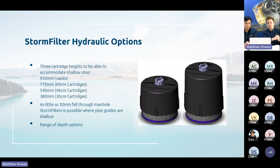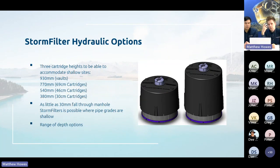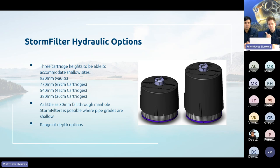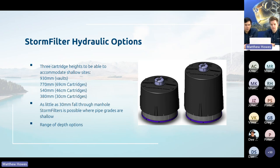There are many places within the Storm Filter where there are individual head losses through the system. We have a range of driving head options: 930mm for our vaults, 770mm, down to 380mm depending on cartridge height within manholes. These head losses account for all losses through the system — the depth of flow in the outlet pipe, losses through the restrictor disk, the under drain, and the cartridge. There is a lot more to understanding the actual head losses through the system than just knowing what driving head is needed for the float to pop.